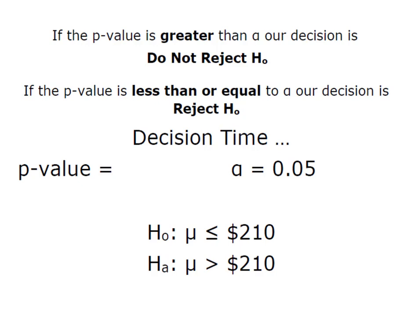So from Minitab, my p-value was 0.027. I'm going to compare that to my alpha 0.05, and I know that p is lower than alpha, so our decision will be to reject H0 and say that there is sufficient evidence to support the claim that the average electric bills are actually higher.